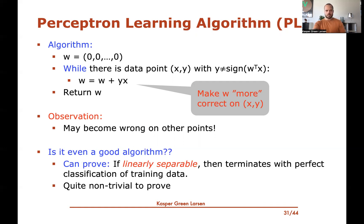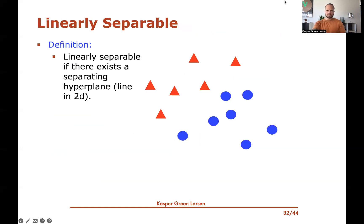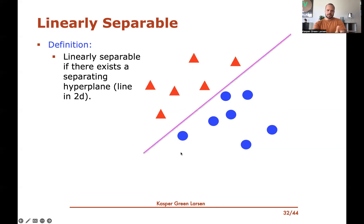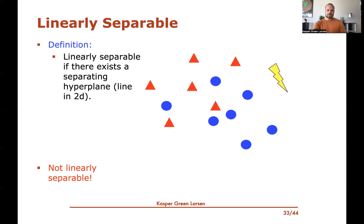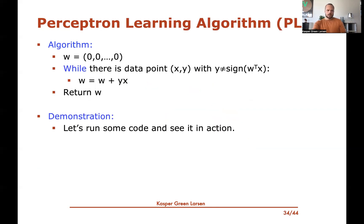A dataset is linearly separable if there exists a separating hyperplane with all points of one class on one side and the other class on the other. If such a line exists, the perceptron learning algorithm will find it. If it doesn't exist — as in a dataset where no line can perfectly separate the classes — the algorithm will never terminate, since it requires perfect classification before stopping.